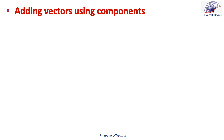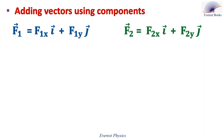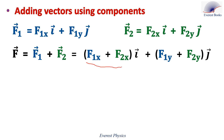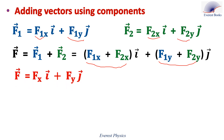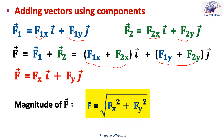Now let's find the resultant of two vectors using components. Consider two vectors F1 and F2. We write the expression of each vector in terms of its components. F is the resultant of the two vectors. The X component of the resultant vector is the sum of the X components of the two vectors. And the Y component of the resultant vector is the sum of the Y components of the two vectors. Then F is of the form Fx·i plus Fy·j. To calculate the magnitude of the resultant vector, we use the expression: the square root of Fx squared plus Fy squared.